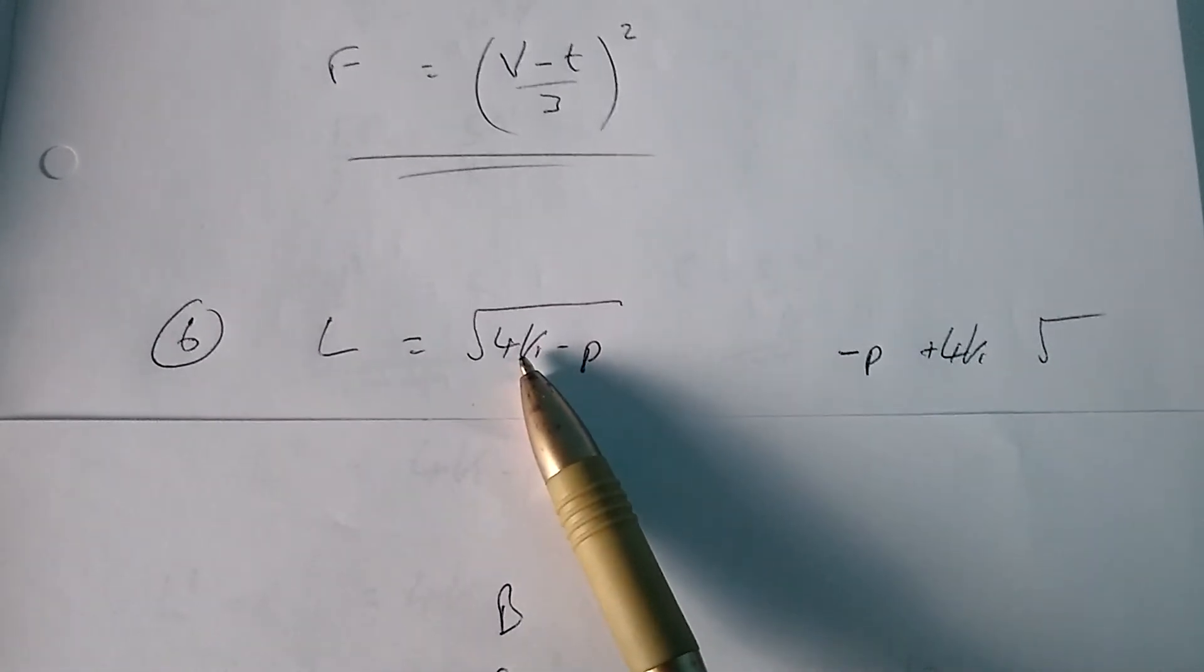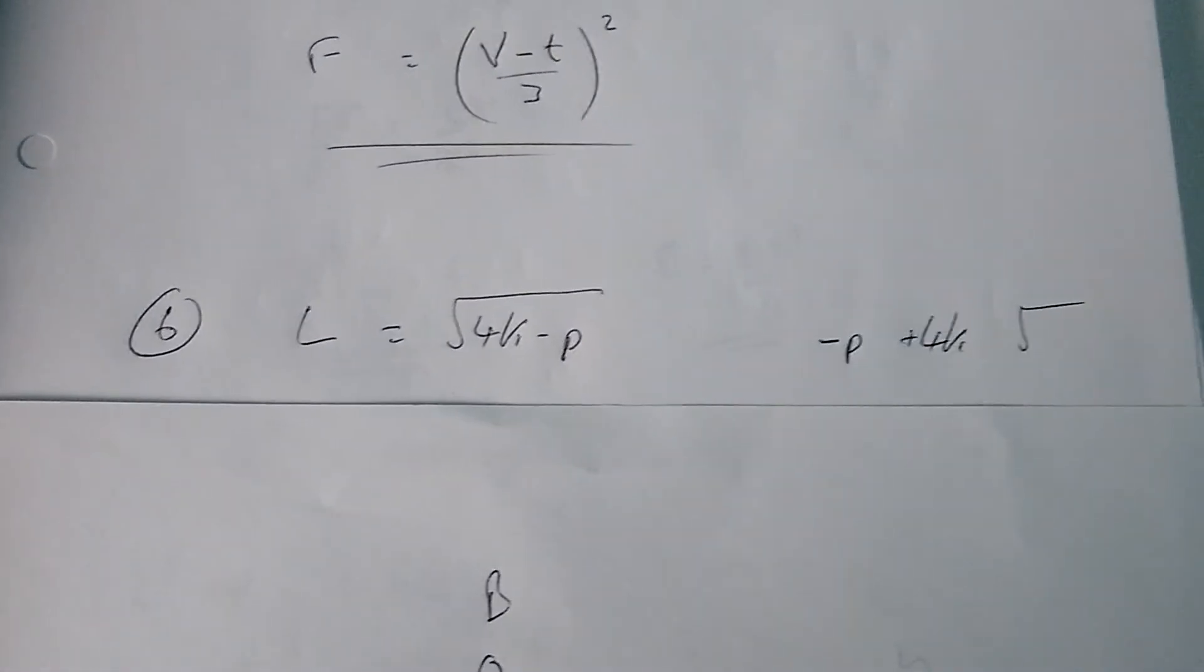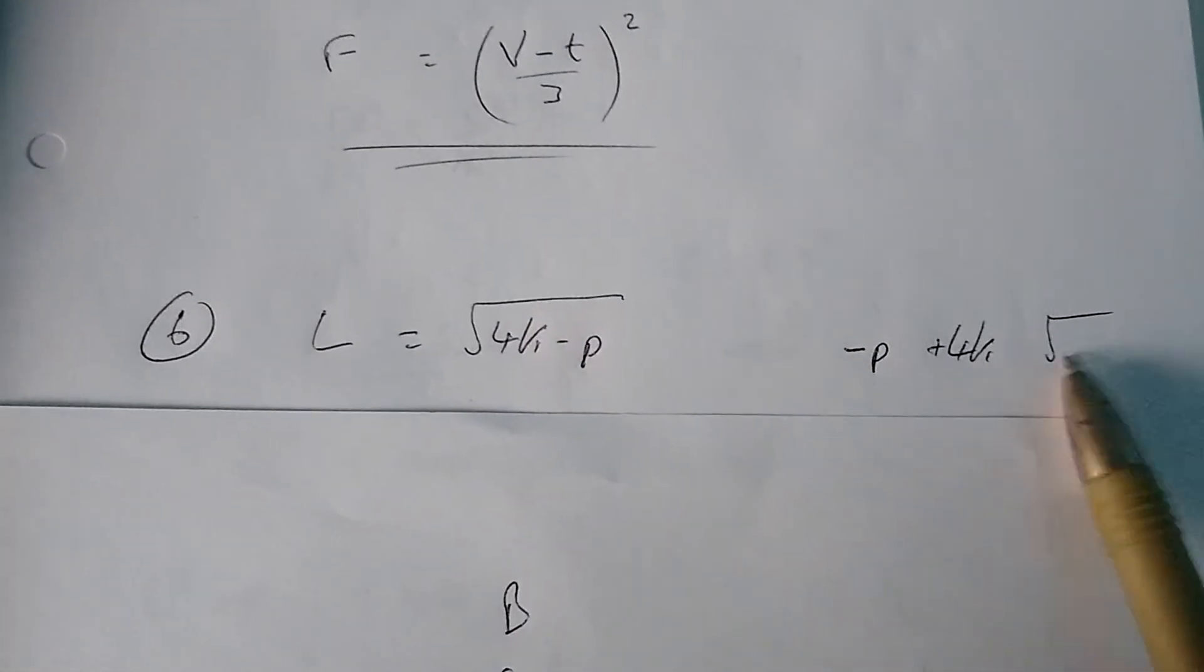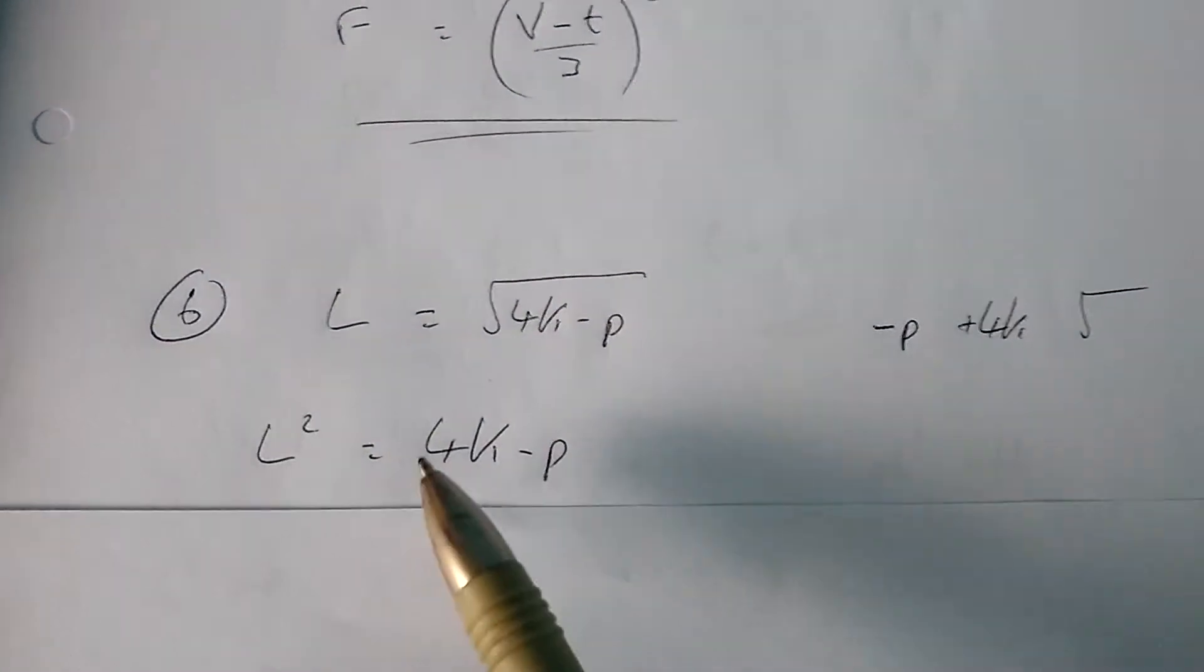then adding on 4k, and then I'm square rooting everything. So again, we need to undo things in that order. So I'm going to undo the square root first. So I'm going to square both sides.